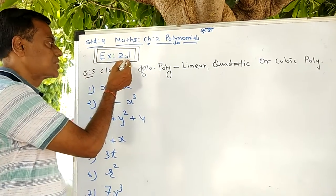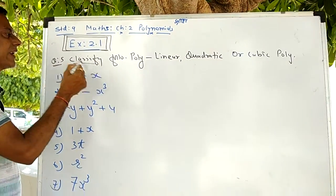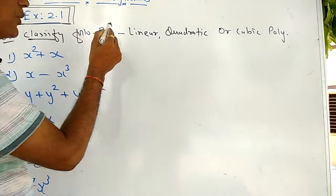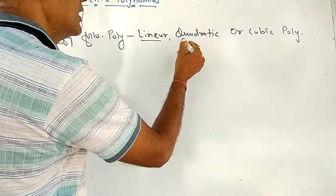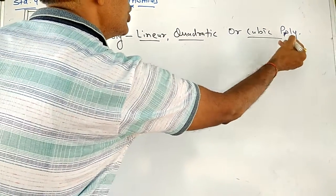Question 5 of exercise 2.1. Classify the following polynomials as linear, quadratic, or cubic polynomial.